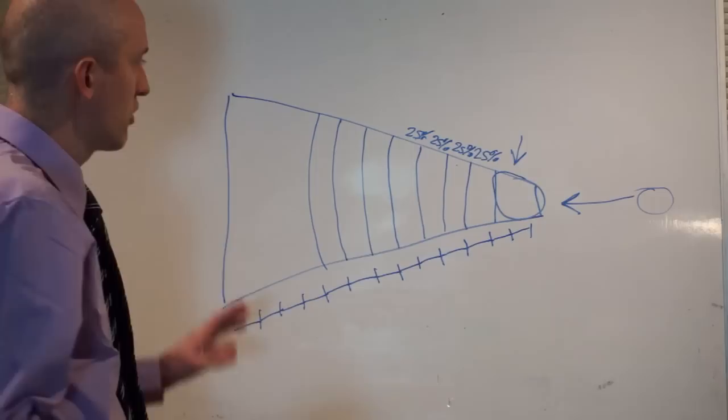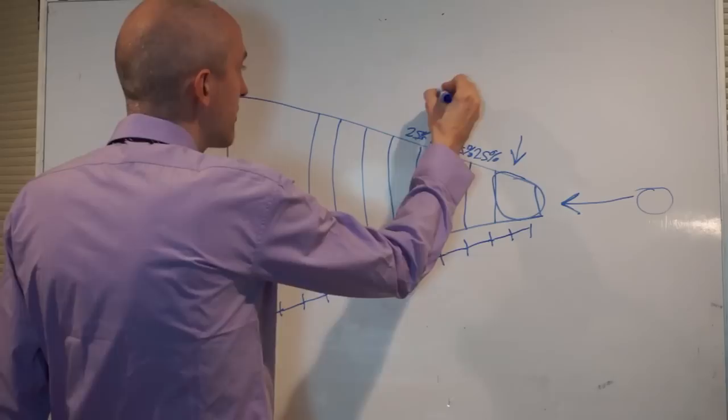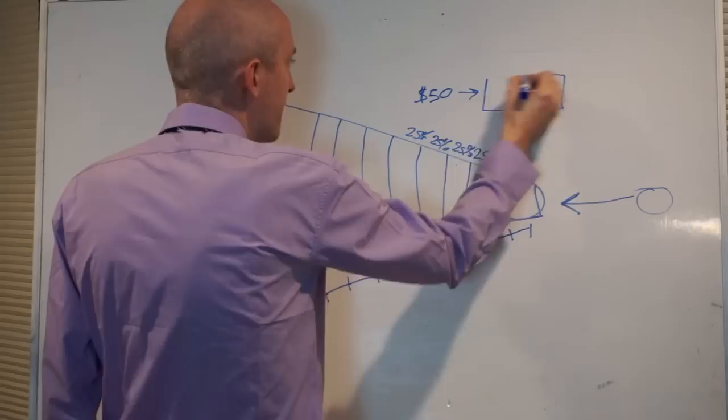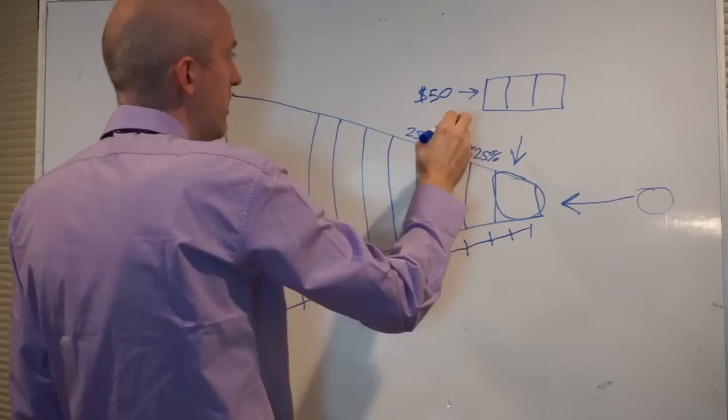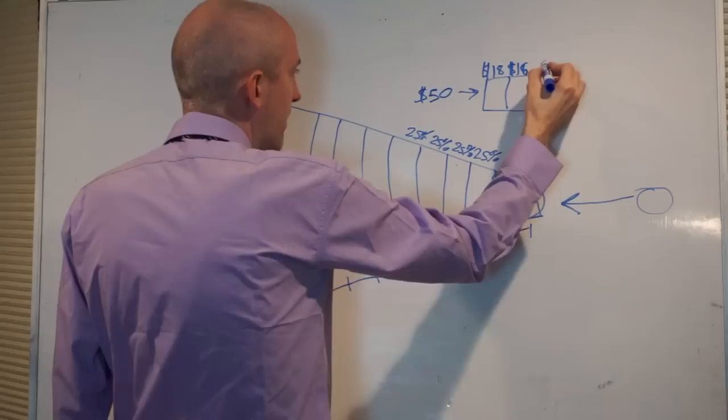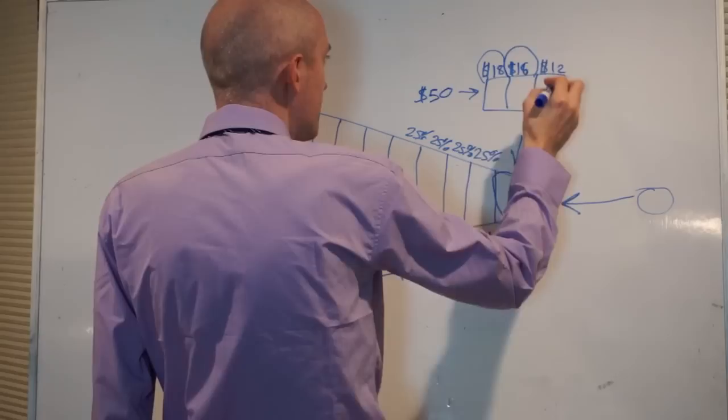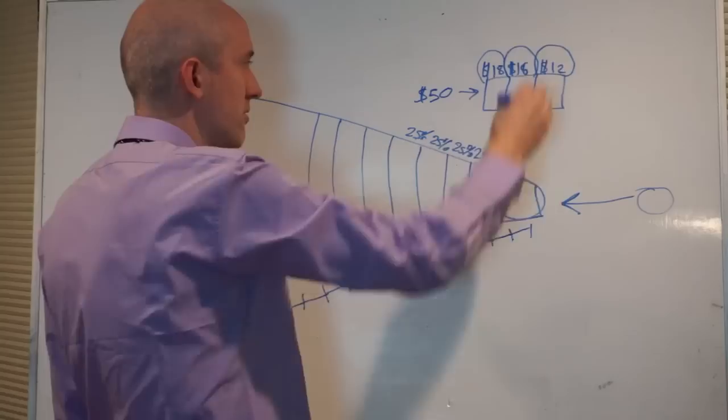Now remember we were talking about taking an investment like fifty dollars. If you were to take fifty dollars, you divide that into three parts—about like eighteen dollars here, sixteen dollars there, and then twelve dollars there.